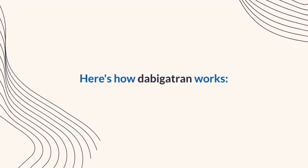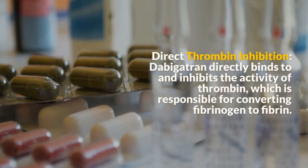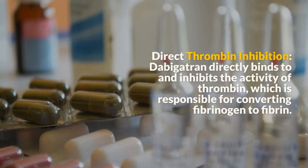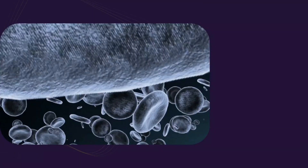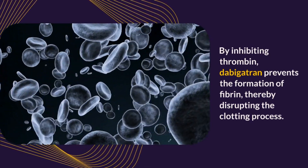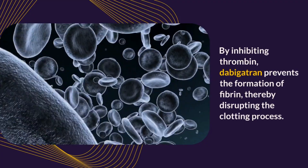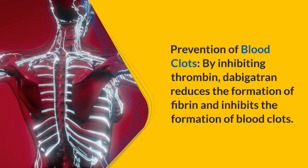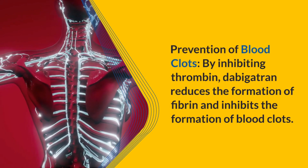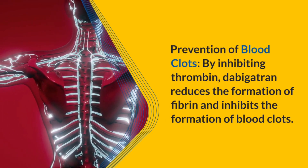Here's how dabigatran works. Direct thrombin inhibition: dabigatran directly binds to and inhibits the activity of thrombin, which is responsible for converting fibrinogen to fibrin. By inhibiting thrombin, dabigatran prevents the formation of fibrin, thereby disrupting the clotting process. By inhibiting thrombin, dabigatran reduces the formation of fibrin and inhibits the formation of blood clots.